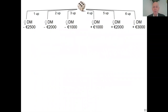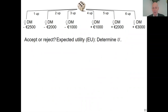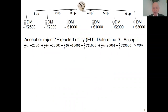Now I go to expected utility. Imagine a single decision-maker. A money amount, depending on a coin flip, is accepted or rejected as a gamble. Expected utility says: first calculate your utility function, then calculate the average of it. If it's positive, you accept; if it's negative, you reject.